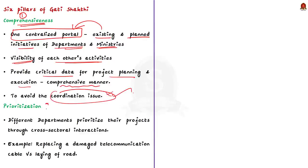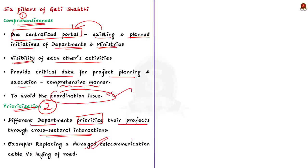The second pillar is prioritization. Through PM Gati Shakti, different departments will be able to prioritize their projects through cross-sectoral interactions. For example, between replacing a damaged telecommunication cable and laying of road, the prioritization has to be given to replacement of the damaged telecommunication cable before starting road construction. By prioritizing projects, you can avoid unwanted expenses and delay in project completion.